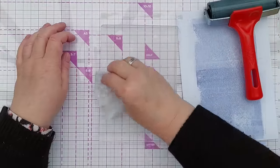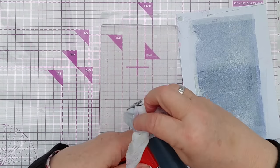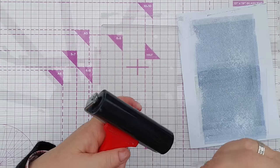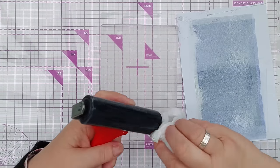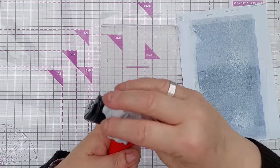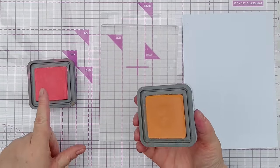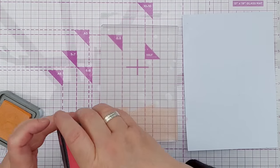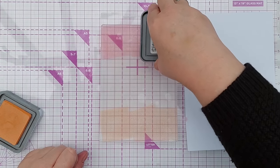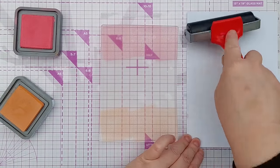Now I'm going to clean off again. I'm going to wipe my brayer this time because I want to play with maybe a pink. So we're going to go to warm colors. I've got worn lipstick and dried marigold and I'm going to add two colors at opposite ends of my gel plate.